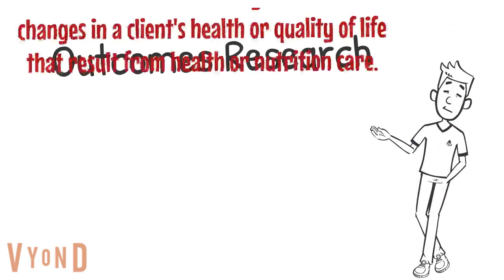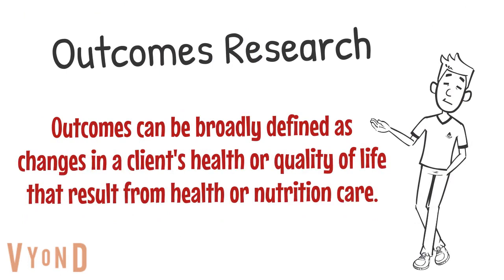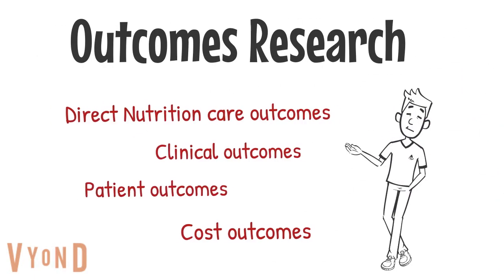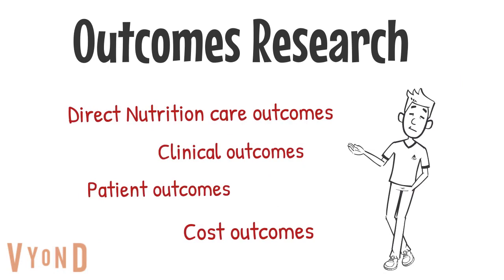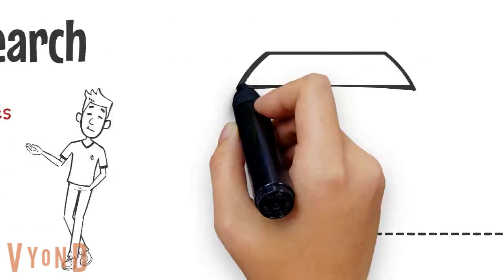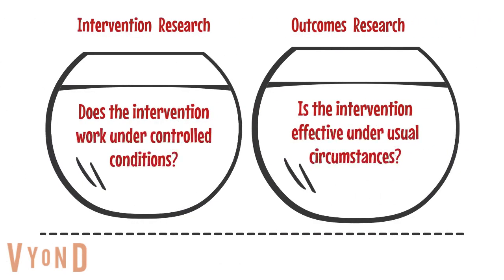Outcomes research focuses on outcomes, which can be broadly defined as changes in the client's health or quality of life that result from health or nutrition care. Outcomes research can be categorized into direct nutrition care outcomes, clinical outcomes, patient outcomes, and cost outcomes. The major difference between intervention research and outcomes research is that one tests an intervention under controlled conditions and the other under usual conditions.